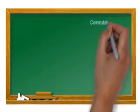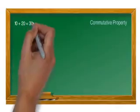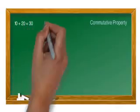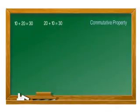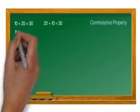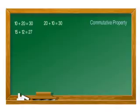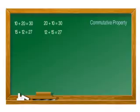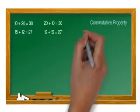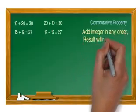Let's see commutative property. Consider this example: 10 plus 20 is equal to 30, and 20 plus 10 is also equal to 30. Another example: 15 plus 12 is equal to 27, and 12 plus 15 is also equal to 27. So you can add integers in any order and the result will remain the same.